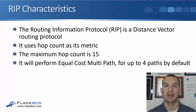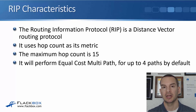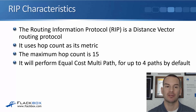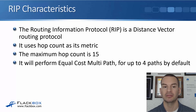RIP uses hop count as its metric. For example, if router 1 wants to get to the 10.1.0.0 network and needs to go via R2, R3, and R4, that network would be three hops away. A hop is a router that the traffic has to pass through to reach the final destination. The maximum hop count is 15, so there's a scalability limitation with RIP, and it's not really used except in lab or demo environments.